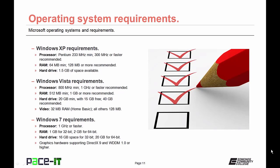Windows Vista really ramped up the requirements. On the processor side, the minimum was 800 megahertz, with Microsoft recommending 1 gigahertz or faster. RAM requirements ramped up substantially — the minimum was 512 megabytes, with 1 gigabyte or more recommended. For the first time, Microsoft required a minimum hard drive size of 20 gigabytes with 15 gigabytes free, recommending at least 40 gigabytes. Microsoft also added video requirements — at least 32 megabytes of RAM for Home Basic, and 128 megabytes for all other versions.